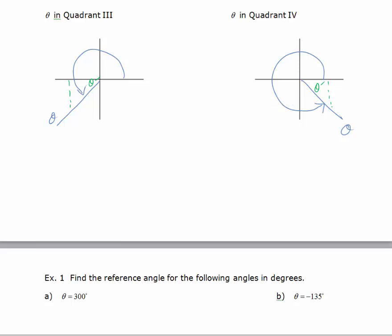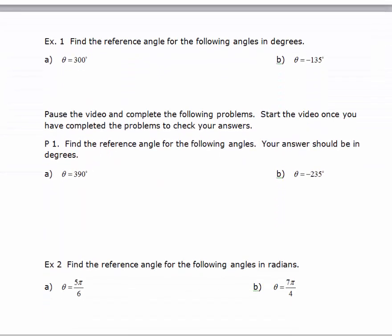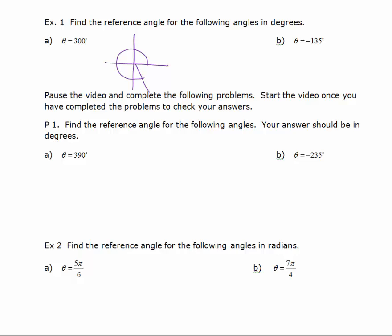You can use formulas for this, but it really is best to just use logic. Let's start with an example. I've got an angle of 300 degrees drawn in standard position. 300 degrees lands in the fourth quadrant. If I went all the way around that would be 360 degrees. I'm at 300 degrees, so theta star must equal 360 minus 300, which equals 60 degrees.